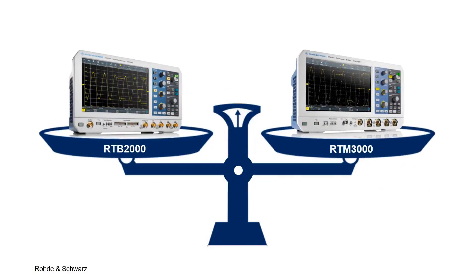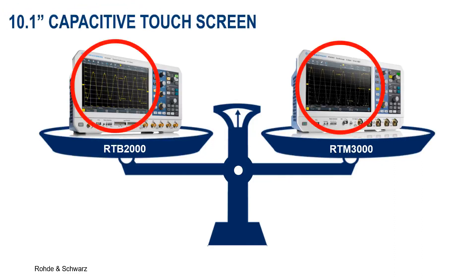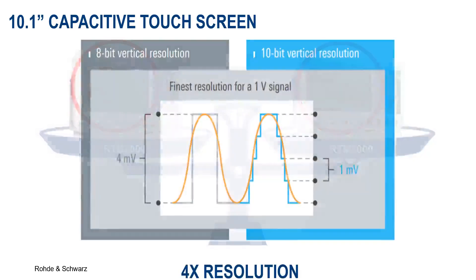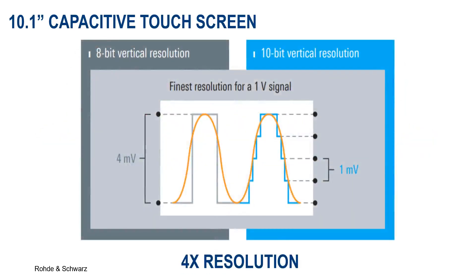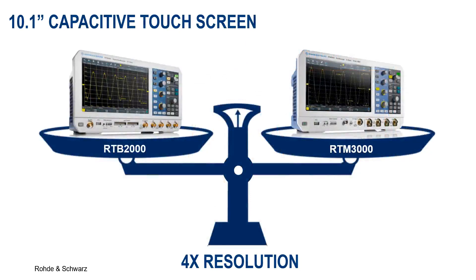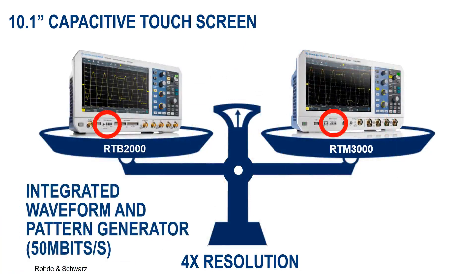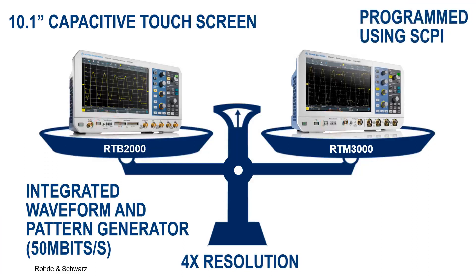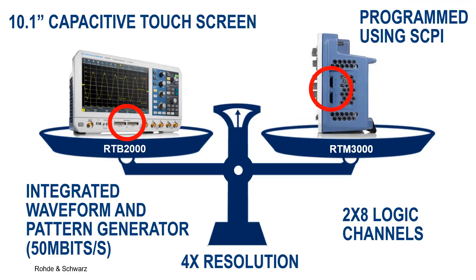On an external level, they consist of the same graphical user interface, which is displayed on a 10.1-inch touchscreen. And with 10-bit analog-to-digital converters and MSO capabilities, both can display multiple time-aligned analog and digital waveforms with four times the resolution as those produced by traditional 8-bit ADC converters. They also both feature an integrated waveform and pattern generator that can produce up to 50 megabits per second, they run using the same programming language, and they both contain two logic pods with eight digital channels each, located on the front of the RTB2000 and on the side of the RTM3000.